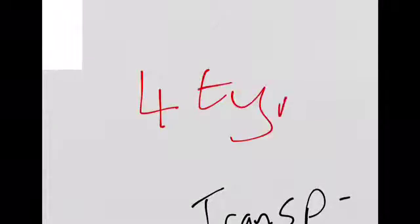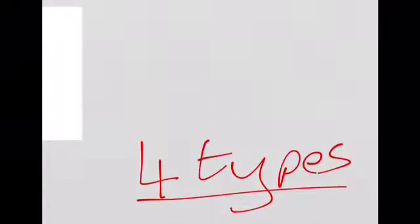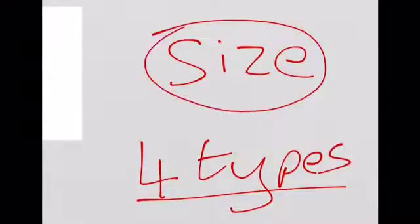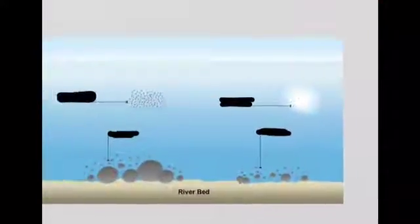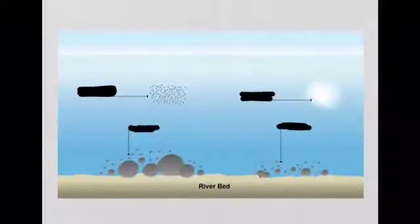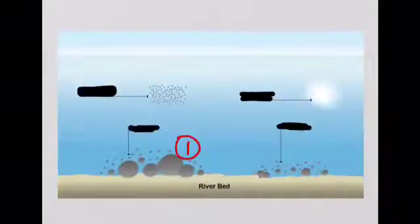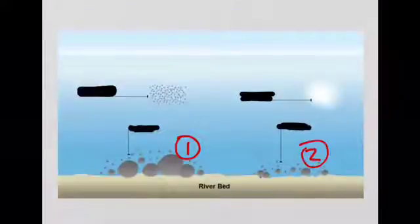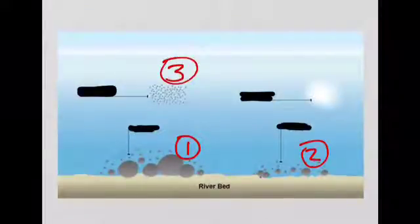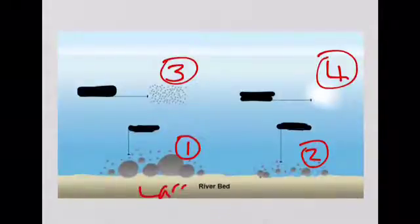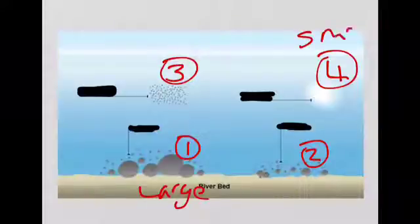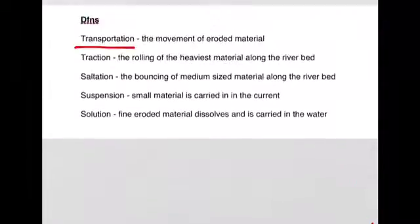Again there are four types of transportation and which method of transportation is used depends on the size of the eroded material which is to be moved. If we come down to this diagram here we will sort these examples. This is the largest material which is very very heavy. This is the second size of material. This is the third size of material and this is the fourth size of material. So we are going from number one being the largest to number four being the smallest. If we come back up to the definitions.